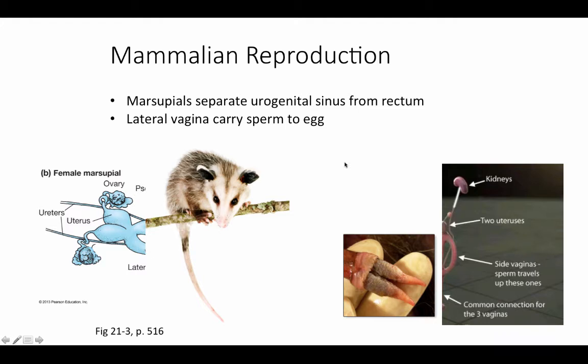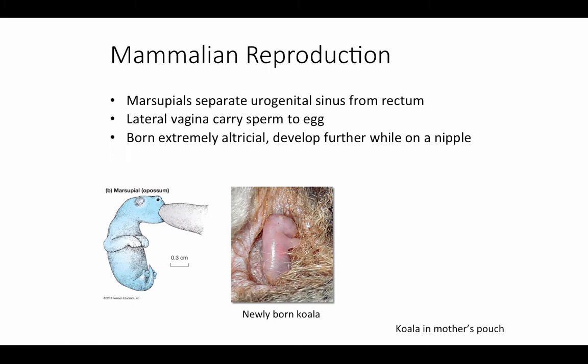Corresponding to these paired lateral vaginae, we also see in male marsupials what we call a bifid or forked penis. Each of the two branches of the penis goes into one of those two lateral vaginae to deposit sperm to be carried up to the uterus.